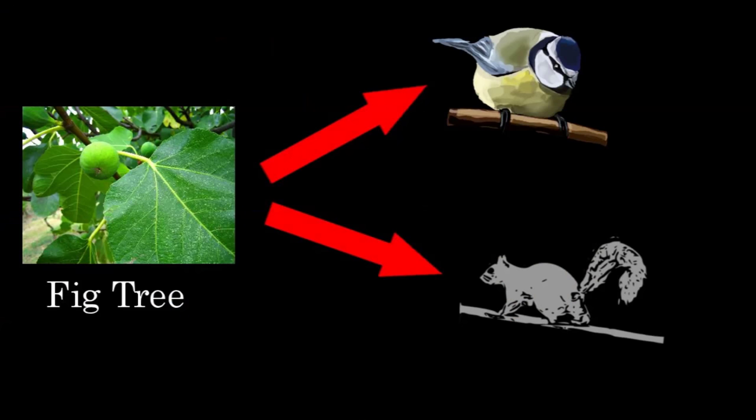Plants can also be keystone species, often acting as a major food source. For example, fig trees in some forests are the only tree that produces food year-round, and many bird and mammal species have now come to rely on this food source.